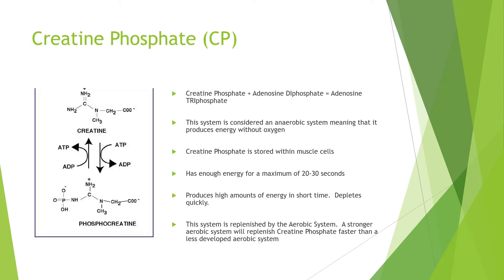The creatine phosphate system, or CP system, takes creatine phosphate and adenosine diphosphate and creates adenosine triphosphate. The creatine phosphate system is considered an anaerobic system, meaning it produces energy without oxygen. Creatine phosphate is stored within the muscle cells. You have enough energy for a maximum of 20 to 30 seconds of utilizing the creatine phosphate system as the primary energy source.